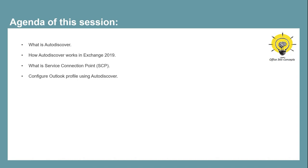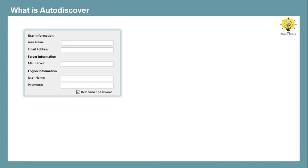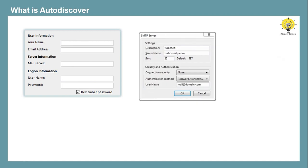Before we talk about what Autodiscover can do for us, let's consider one example and understand how things used to work when Autodiscover service was not available. In those days, when users had to configure their mailboxes in Outlook client, they had to enter the server details manually — for example, the incoming mail server and outgoing mail server used to send and receive emails. But this practice wasn't feasible because it is not easy to remember these server settings, and it is a time-consuming task as well.